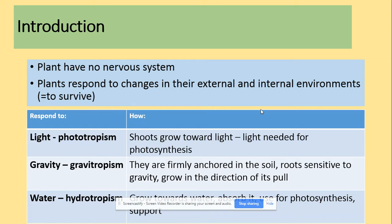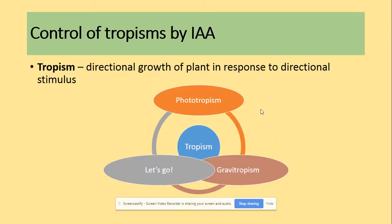A response to light is called phototropism. Shoots will grow towards the light because light is needed for photosynthesis. Response to gravity is called gravitropism. There are minerals in the soil so the roots are sensitive to gravity and grow in the direction of its pull. Response to water is called hydrotropism, which is growth towards water to absorb it and use it for photosynthesis or support. A definition of tropism: it's a directional growth, and that's the main difference between taxes and kinesis and tropism.